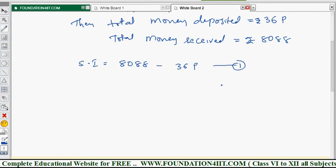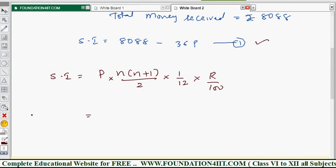Now you can use the simple interest formula. Simple interest in this recurring deposit is P into N into (N plus 1) divided by 2 into 1 by 12 into R by 100. This will substitute what are the values are given. So from equation one, in the place of simple interest, you take 8088 minus 36P. This is simple interest value. And P into N into (N plus 1), so N is the 36 months. So 36 into 37 by 2 into 1 by 12 into R value. So rate of interest is 8%, so 8 by 100.